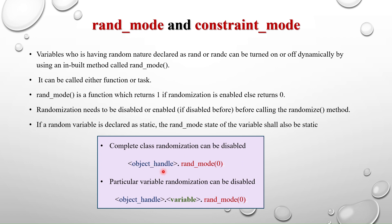To disable rand_mode for the entire object, use: object_handle.rand_mode(0) — zero means disable, this is called as a task because we are passing an argument. To disable rand_mode for a particular variable, use: object_handle.variable_name.rand_mode(0). For example, p1.a.rand_mode(0) disables rand_mode for variable a inside object p1. To enable it again, call rand_mode(1) before randomizing.